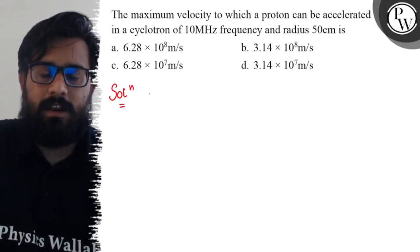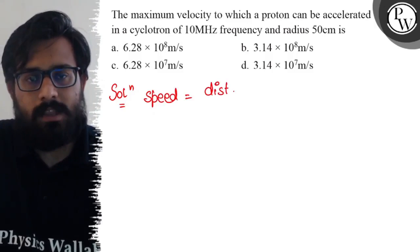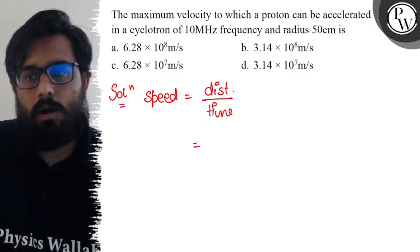So now, we have a direct relation that speed equals distance upon time. In this cyclotron, when a charged particle goes around and covers a round,